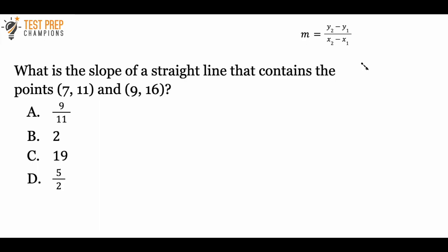What is the slope of a straight line that contains the points (7, 11) and (9, 16)? The formula for slope is y2 minus y1 over x2 minus x1. Just keep in mind that on the real test, you'll want to go to the formula sheet and pick out this formula if you have to do a slope calculation. Let me give you a chance now if you'd like to pause the video and try to figure this out.